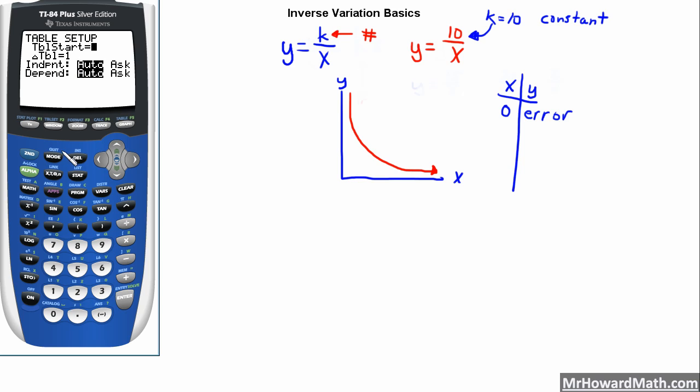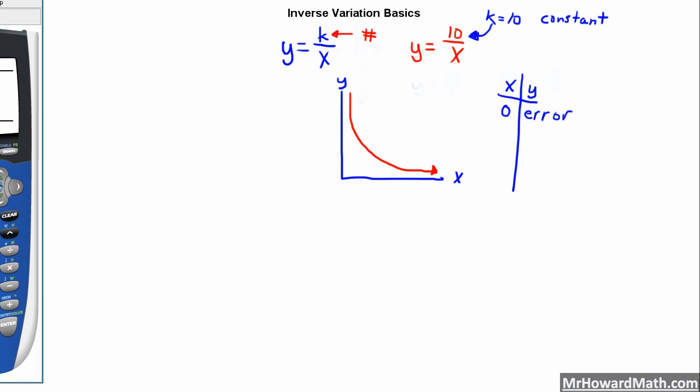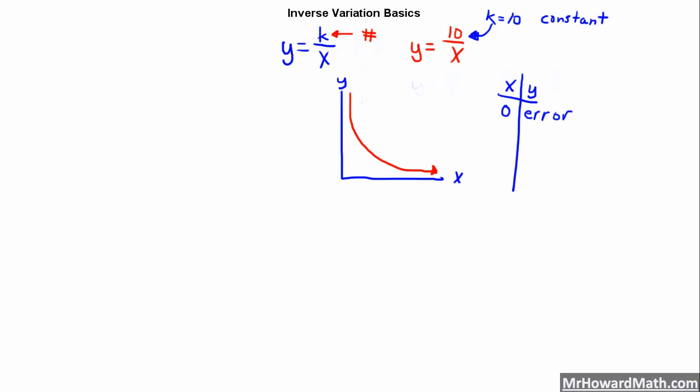10 over x. Second step, we set up our table. We want to start at 0 in this case, go up by 1. That will be fine. So our table start is 0, change in table is 1. Then we go second graph, which is our third step. It takes us to our table. For this example, as you can see, when x is 0, we have an error. So I'm going to move the calculator out of the way here. And let's fill out the values that we saw.